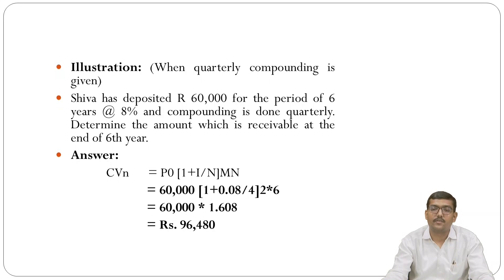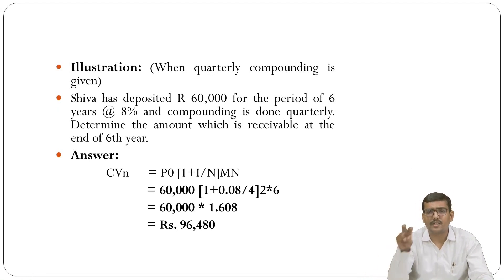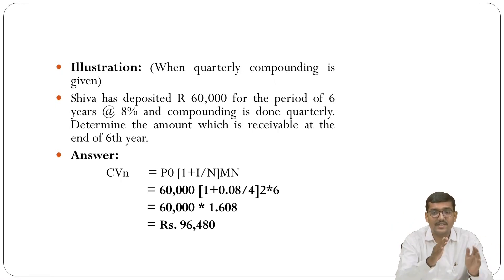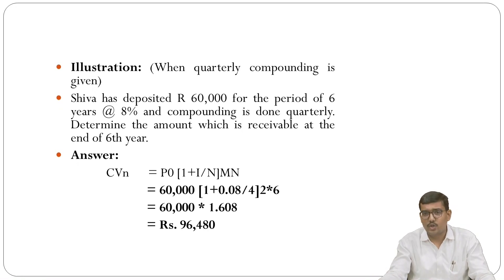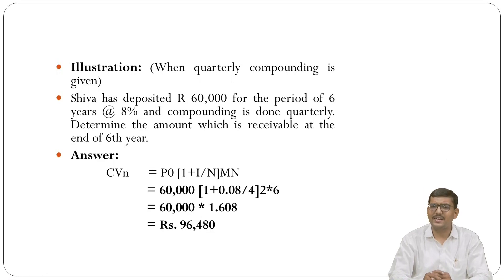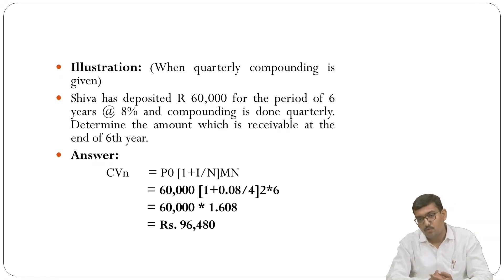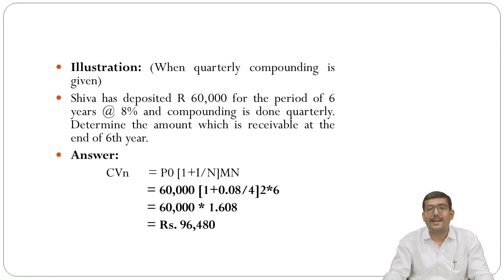Now for quarterly compounding: Shiva has deposited ₹60,000 for 6 years at 8% with quarterly compounding. Here P₀ = 60,000, i = 0.08, n = 6. Quarterly means four quarters per year, so m = 4. Formula: CVₙ = P₀ × (1 + i/m)^(m×n) = 60,000 × (1 + 0.08/4)^(4×6). You get ₹96,480.